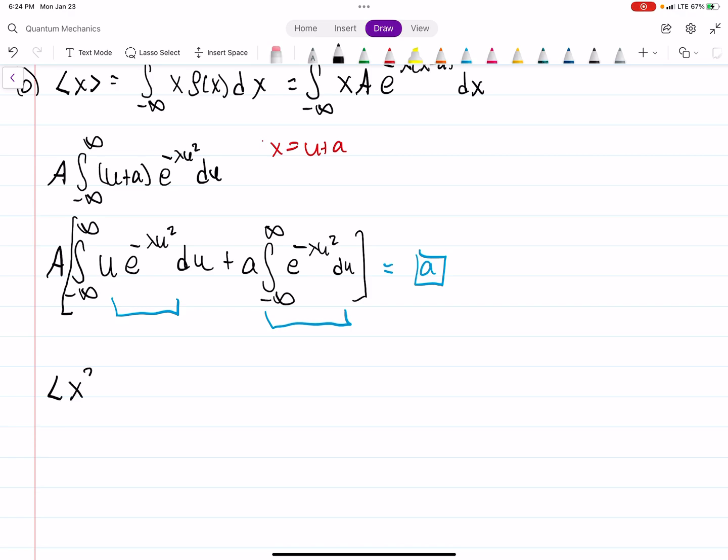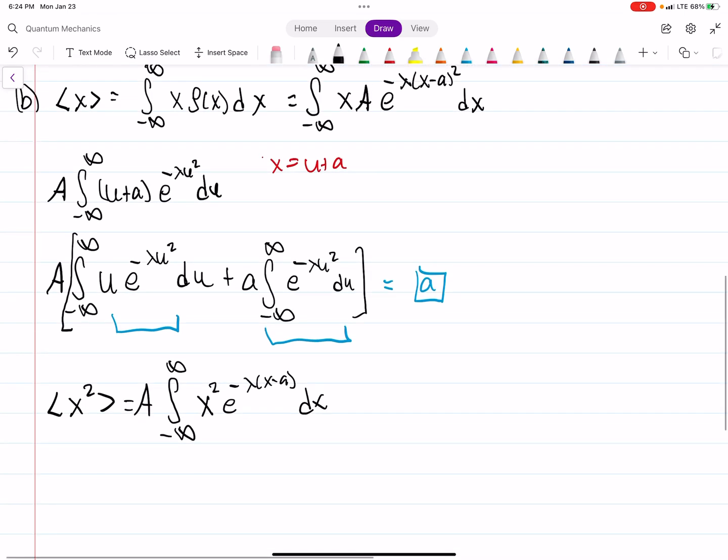And then to find the expectation value of x squared. Well, it's really exactly what we did before. The only difference is instead of multiplying our function by x, now we're multiplying it by x squared. And then you can kind of imagine what we're going to do here. There's really no difference. The only thing to keep in mind is if x equals U plus A, x squared is U squared plus 2AU plus A squared.